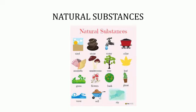Natural substances are those provided to us by mother nature. Substances obtained from living things such as animals and plants are called biotic substances. Substances like air, soil, and water that are not obtained from living things are called abiotic substances. Substances we get from plants are called substances of plant origin — for example, jute and cotton.